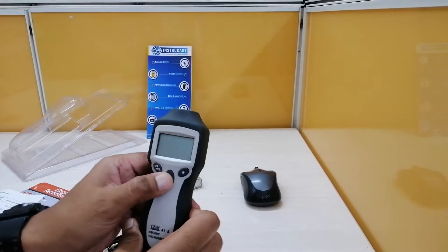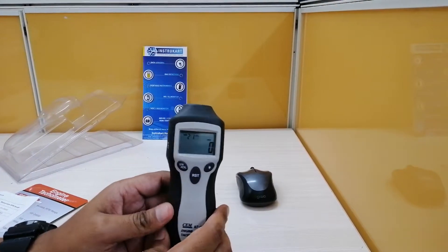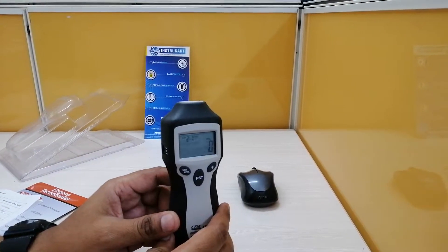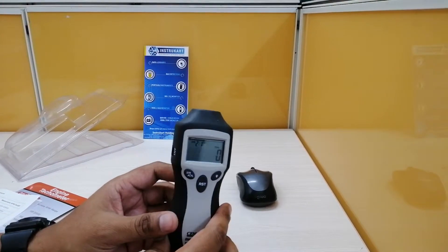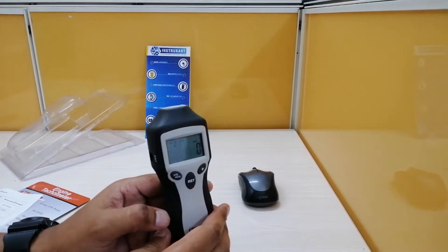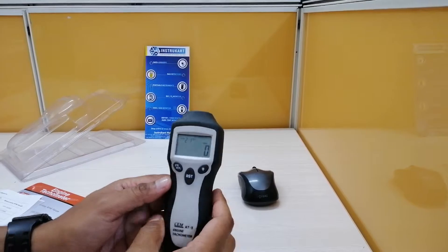It also got a good LCD display and the accuracy for this is plus or minus 10 RPM. The display interval for this device is 0.5 seconds and it has got a weight of almost like 177 grams.